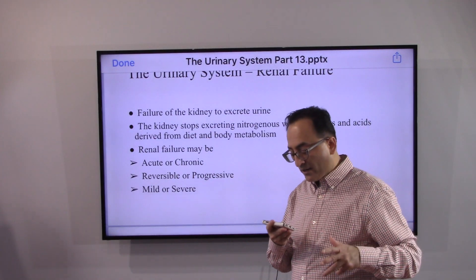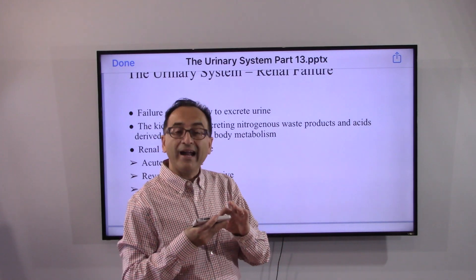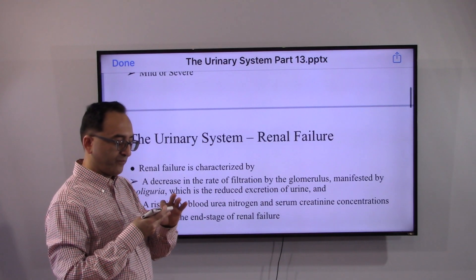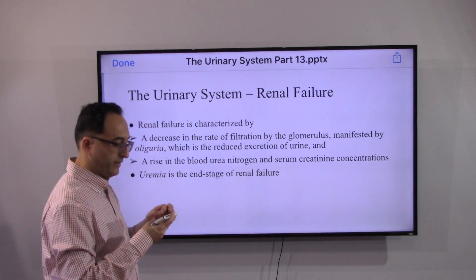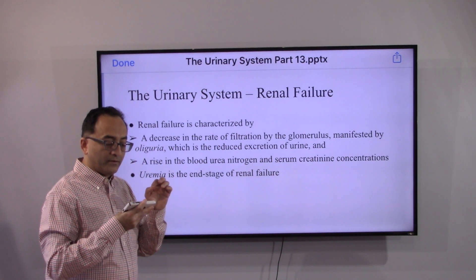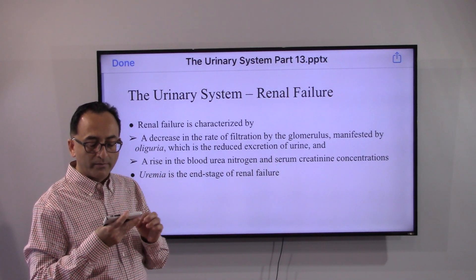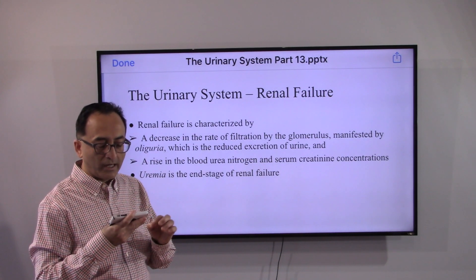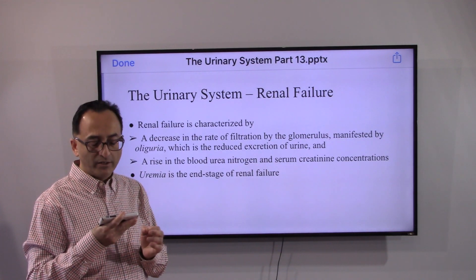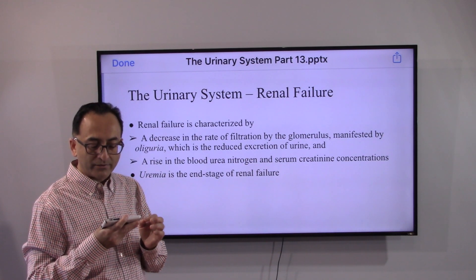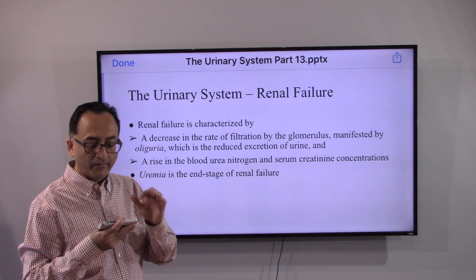Renal failure may be acute or chronic, reversible or progressive, mild or severe. It is characterized by a decrease in the rate of filtration by the glomerulus, manifested by reduced output of urine, and a rise in blood urea nitrogen and serum creatinine concentration. Uremia is the end stage of renal failure, which we have discussed in a prior video.